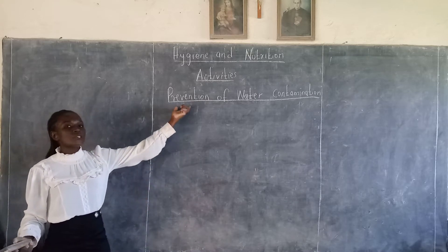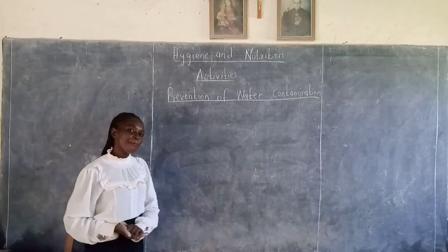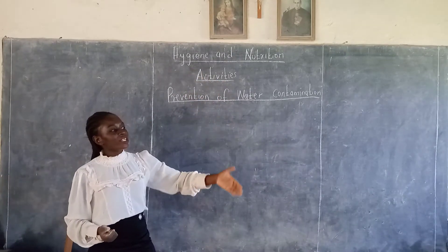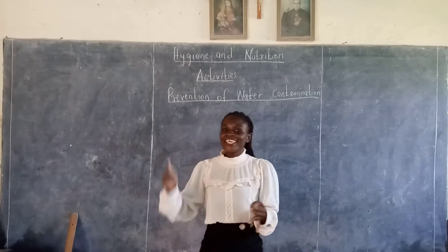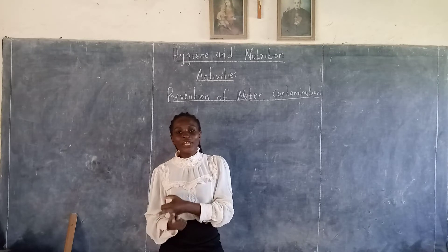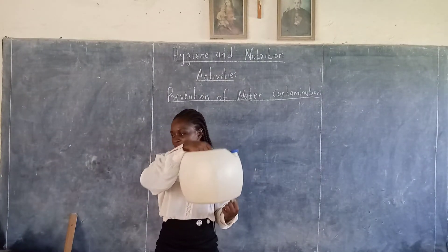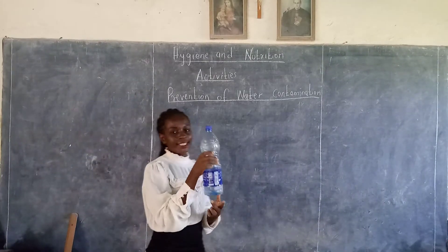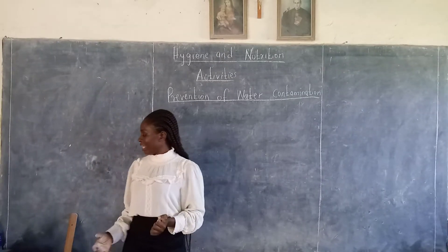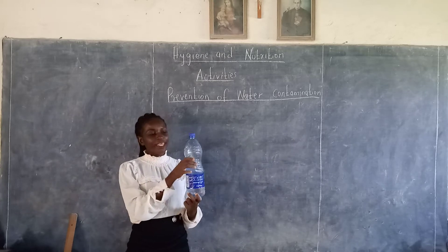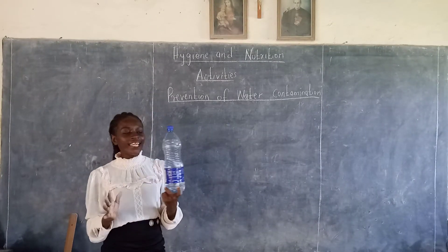In today's lesson, I want us to discuss how we can prevent water contamination. Do you have water at your home? Apart from running water from the tank, we always store water at home. Some use bottles, some use water containers like jerry cans and buckets. When storing your water, you always use a clean container. Before I store my water, I ensure that the container is clean — very clean.